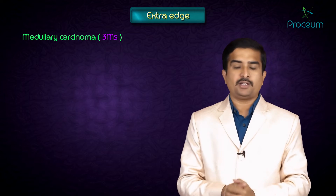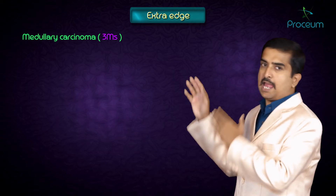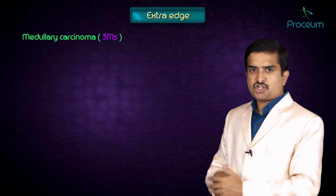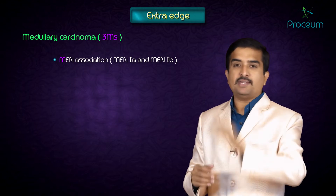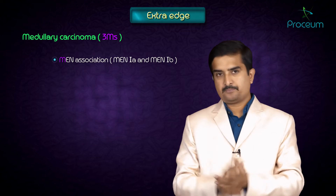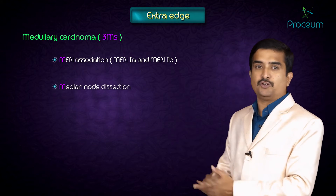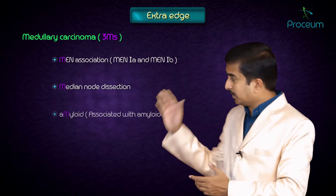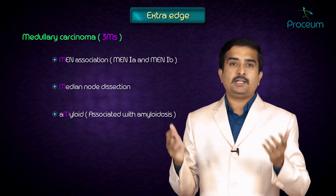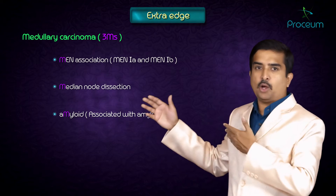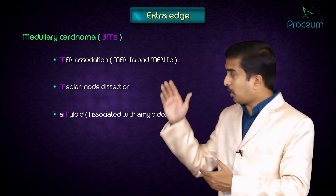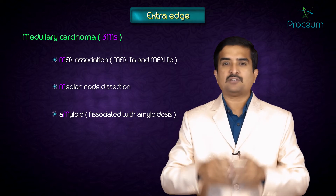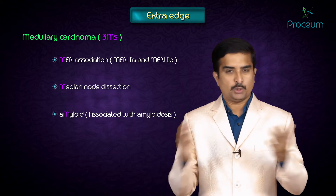For medullary carcinoma of the thyroid, remember three M's: the first M stands for MEN association — it is associated with MEN 2A as well as MEN 2B; the second M stands for median node dissection; and the third M stands for amyloid, which is associated with amyloidosis.